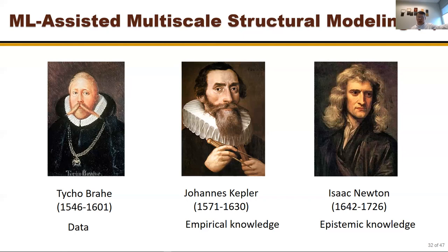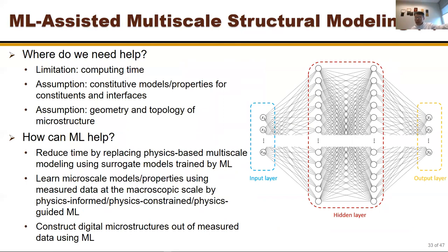That said, machine learning is important and helpful where human knowledge is limited. Our knowledge is not unlimited — when dealing with nonlinear behavior, for example, the constitutive material model is often just an assumption. Machine learning can help in three areas: first, reducing computing time by constructing form-free surrogate models, enabling design optimization that would be infeasible with large finite element models.